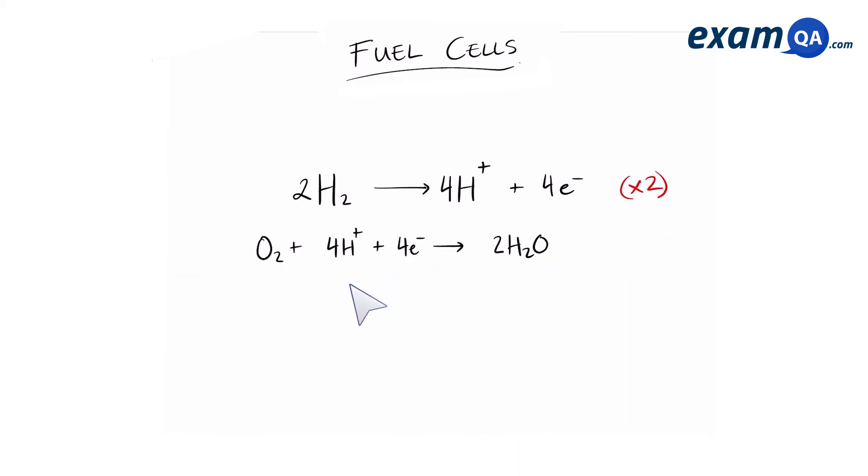For example, we can see that on the left of the second equation, there are four hydrogens, and on the right of the first equation, there are four hydrogens. These cancel out because they are the exact same thing. Also, on the left, there are four electrons, and on the right, there are four electrons. So those also cancel out. What remains can now be added. And this is the overall equation.